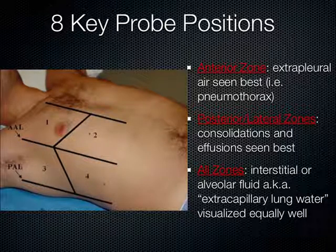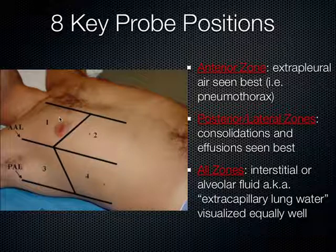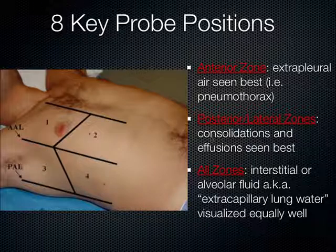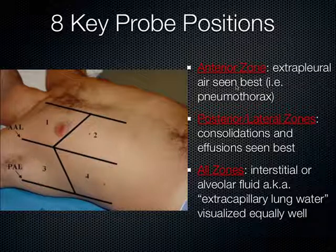Recall the eight probe positions to assess lung pathology — four on one side of the chest, repeated on the other. When looking for consolidations from pneumonia, it's really the posterior lateral zones that are focused on. The anterior zone is where pneumothorax is better seen, so these posterior zones are where we look for consolidations.